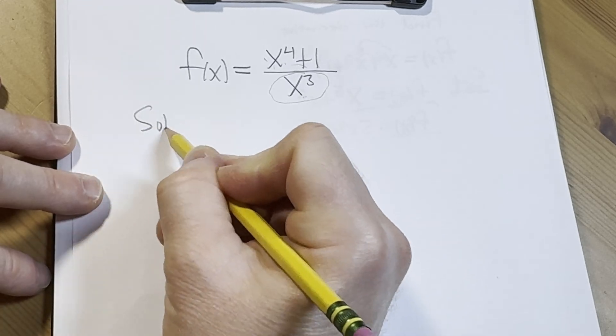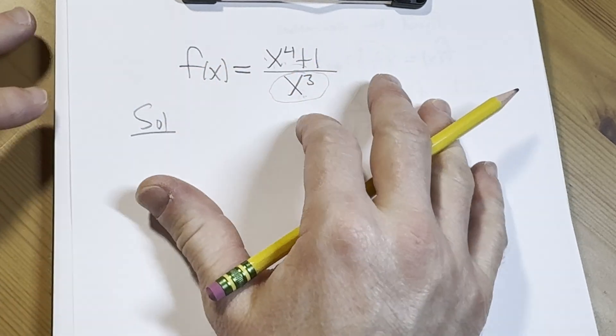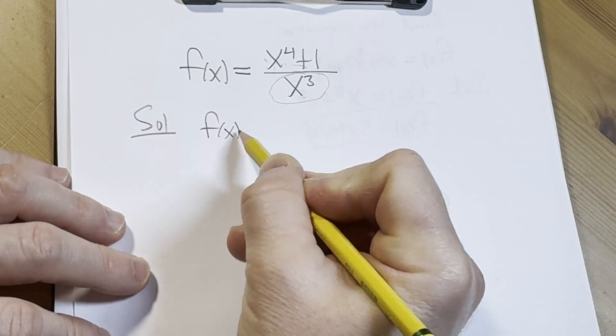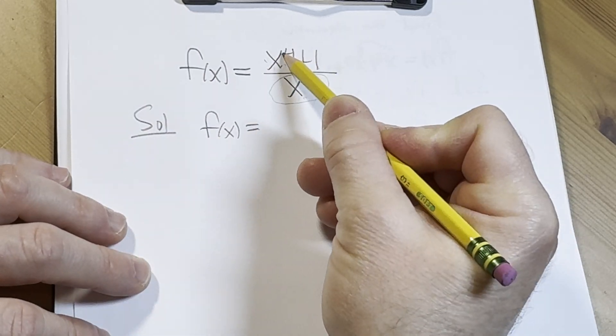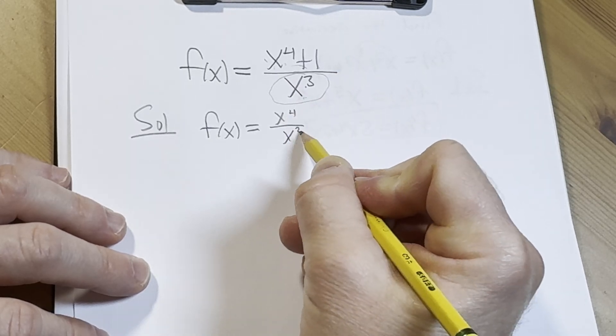So before we differentiate, we're going to break this up so that we can avoid the quotient rule. We have f(x) equals x to the fourth over x cubed plus one over x cubed.